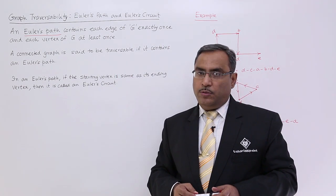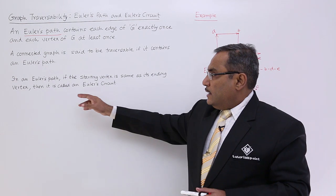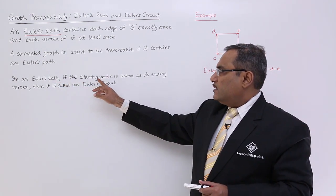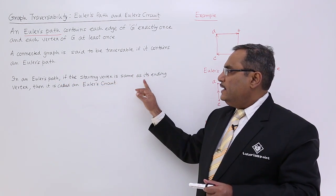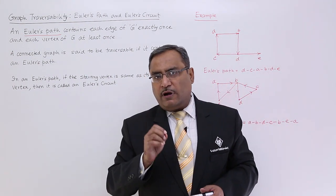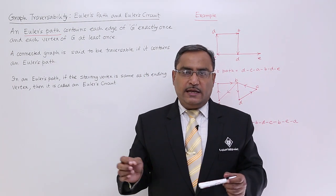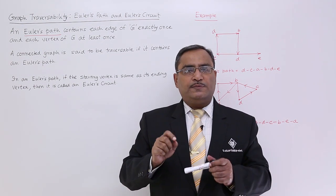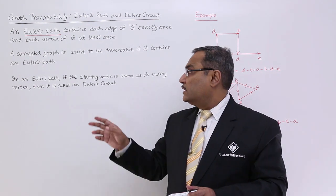Now let me discuss Euler's circuit. In an Euler's path, if the starting vertex is same as its ending vertex, then it is called an Euler's circuit. That means if the starting and ending vertices are the same, then that particular Euler's path will be known as the Euler's circuit.